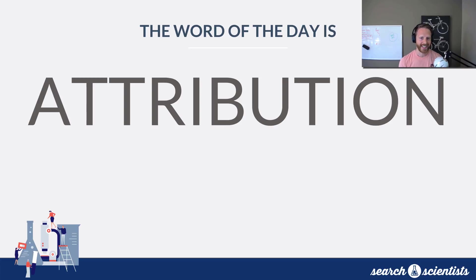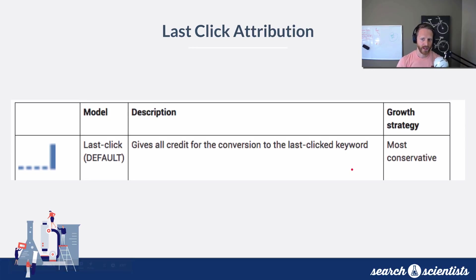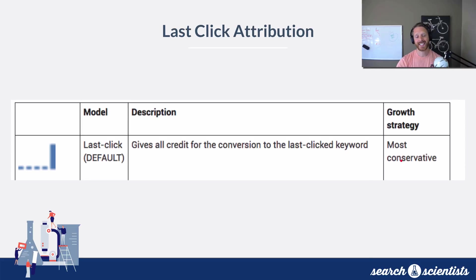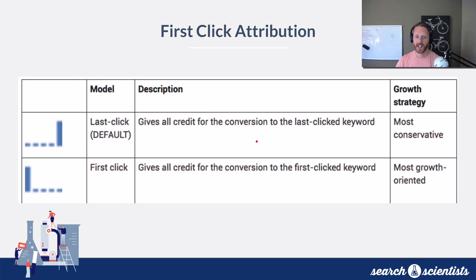The word of the day is attribution. We're going to talk about the different kinds of attribution that Google has. The first one is the most popular and the most conservative, meaning it will keep your account the smallest — basically giving 100% of the credit to that last click. No credit, no credit, no credit, no credit — all the credit. Last click, fairly straightforward.